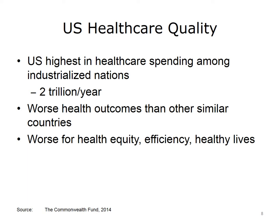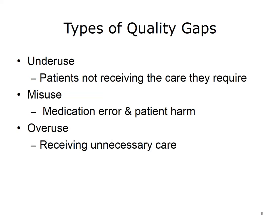We're also the worst nation for health equity, efficiency, and healthy lives. These data provide evidence of gaps in the quality of care. These gaps include underuse — many people do not receive medically necessary care, such as mammography and prostate screening. Misuse — when patients are harmed or receive the wrong care, such as receiving the wrong medication or contracting hospital-acquired infections. Overuse — many patients receive care that is not needed, or for which there is an equally effective alternative that costs less or causes fewer side effects, such as unnecessary diagnostic tests, sometimes referred to as defensive medicine.